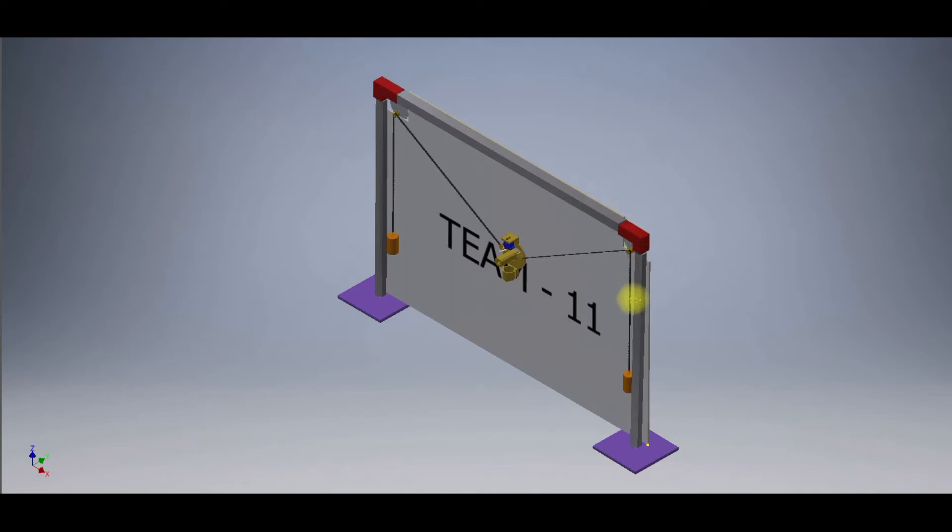The frame, elbow joint, foot, sheet, and the motor clamp all form the structural unit. The gondola forms the pen holding unit and the servo motor and the stepper motor form the motion control unit.